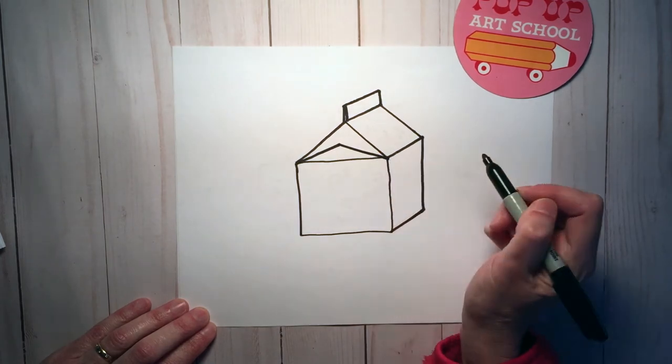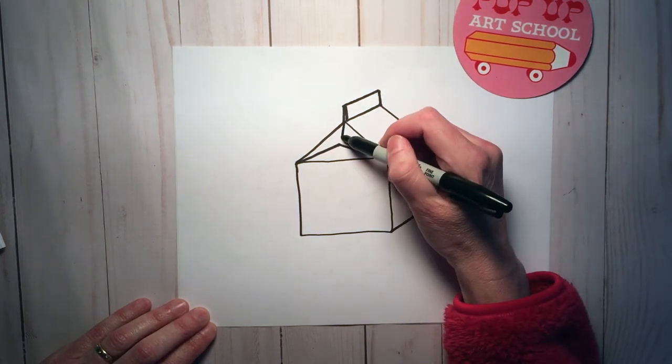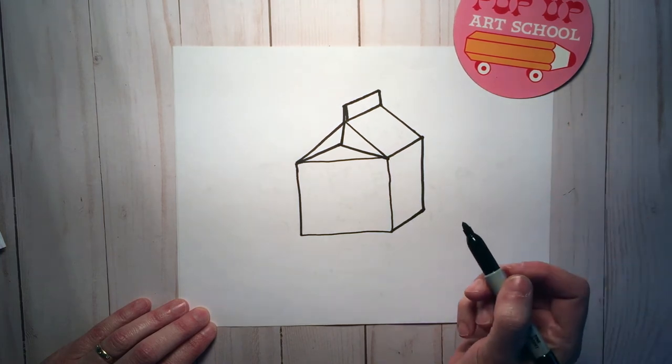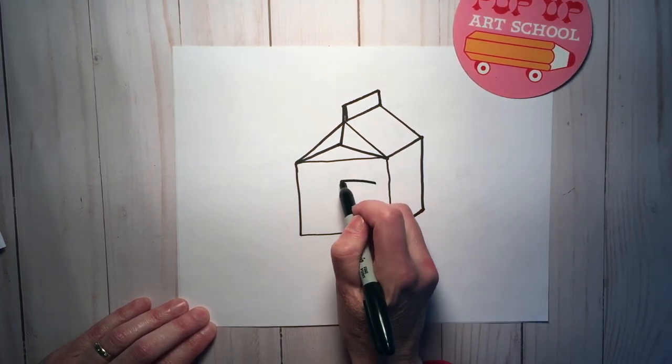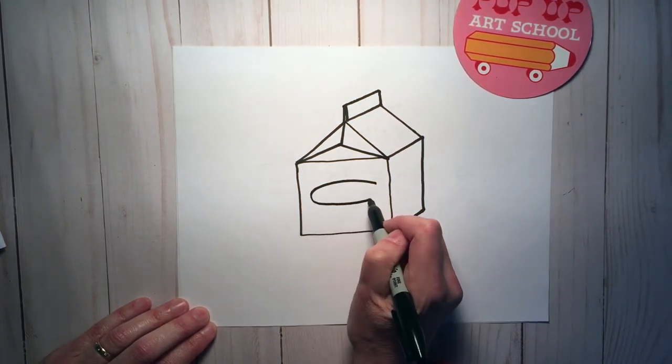I'm going to do a really wide V that's upside down and then a straight line on the top, a very skinny oval.